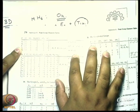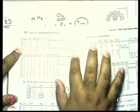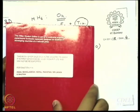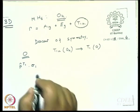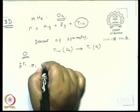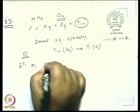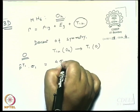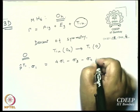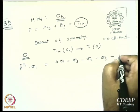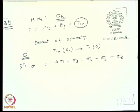I promised I will not make you work out the projection operators for anything after the first problem, so I will just give you the answer. I strongly suggest you work it out yourself later for practice. When the projection operator of T1 operates on sigma 1, you get 4σ1 minus σ3 minus σ4 minus σ5 minus σ6.